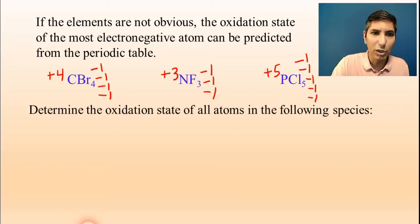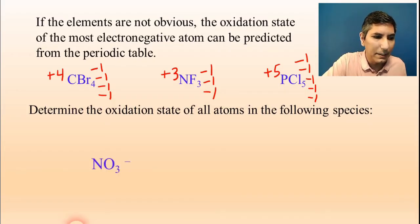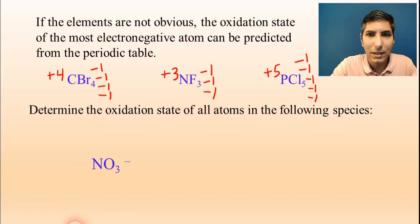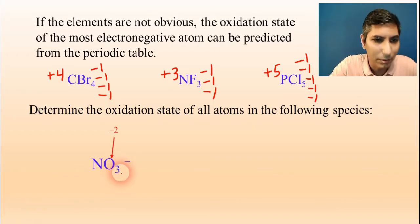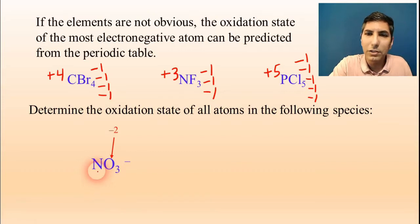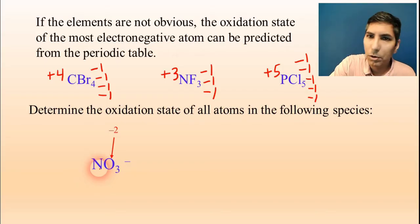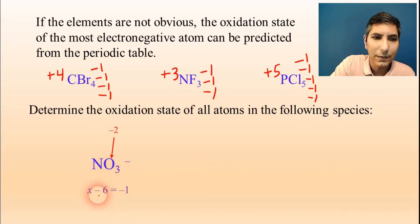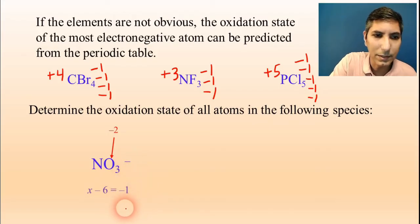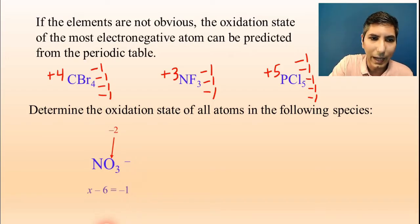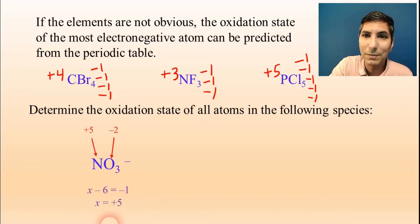Let's determine the oxidation state of all atoms in the following species. For the nitrate polyatomic ion, use what you know to solve for what you don't know. Oxygen is negative two; we don't know what nitrogen is, so call it X. Three oxygens at negative two apiece gives negative six. The entire ion adds up to negative one, so X + (−6) = −1, giving X = positive five. Nitrogen has a charge of positive five in this substance.